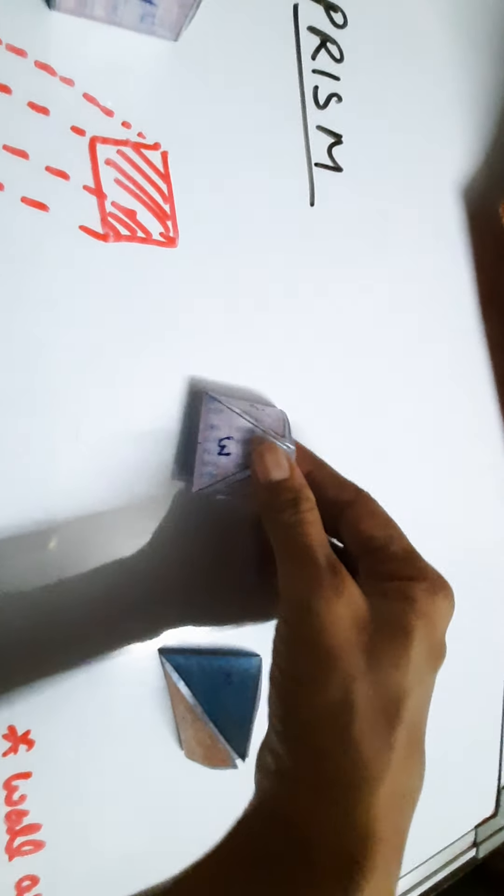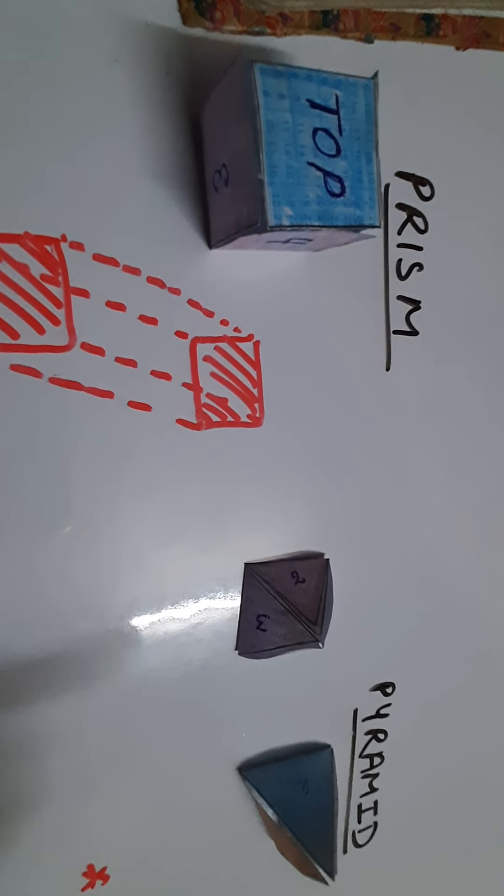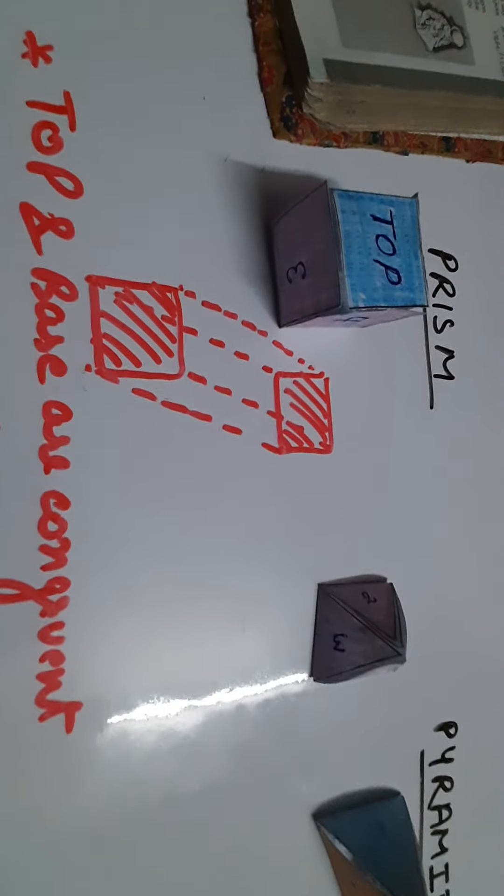Whereas in case of a pyramid, the top is pointed. The base can be triangular, square, hexagonal, pentagonal — any polygon. The minimum is three sides, since without at least three sides we cannot form a closed figure. But the walls in a pyramid are always triangular walls. This is the key difference between a prism and a pyramid.